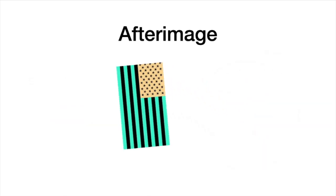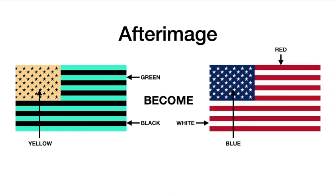So what we have here is our green, black, and yellow flag. And when our neurons become fatigued with this, and they can hold it for as long as you want, but they're getting fatigued in terms of suppressing the red. And as soon as I replace it with a white background, it becomes our flag: red, white, and blue.